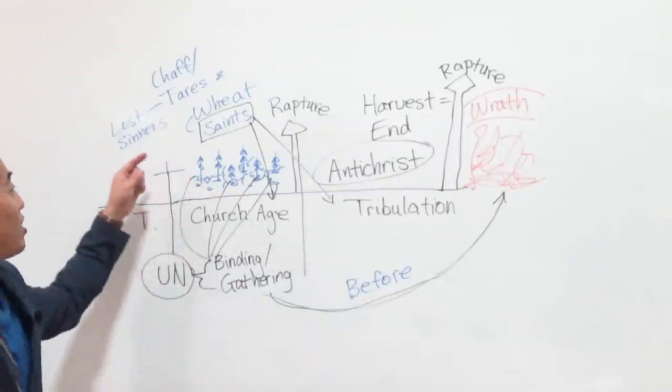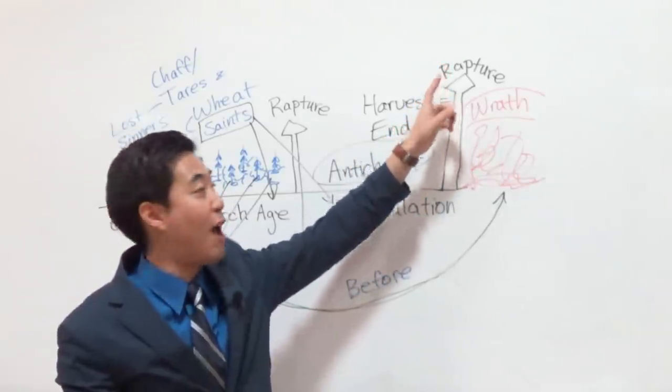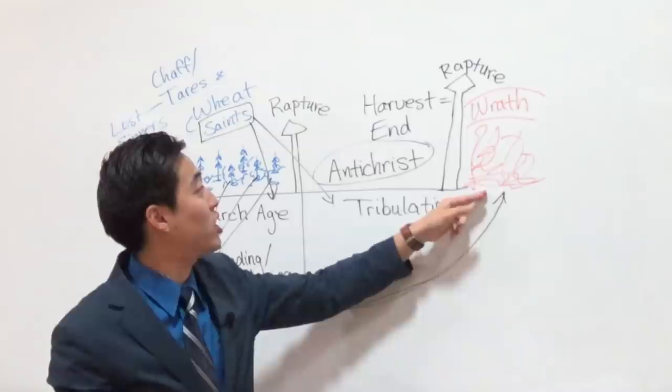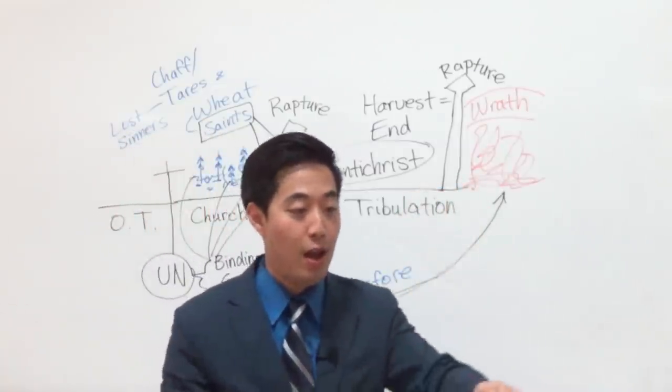This is talking about the wrath. And he is gathering these lost sinners undoubtedly for his wrath. But who's first? These guys are gathered first before these guys are cast into his wrath. So yes, there are saints that go through the time of the end. But what happens? They go up first, their rapture first, before the lost sinners are cast into the fire. Doesn't change that fact.